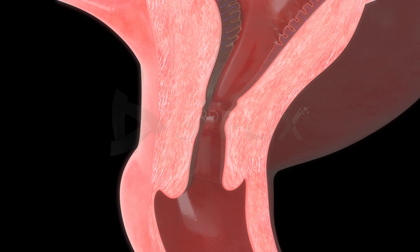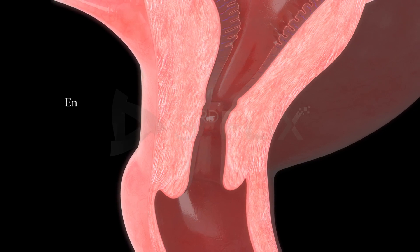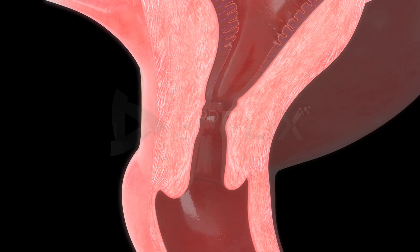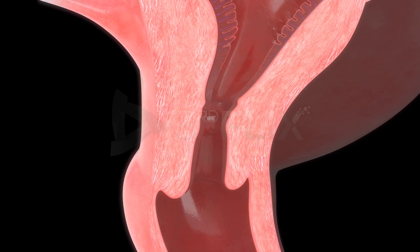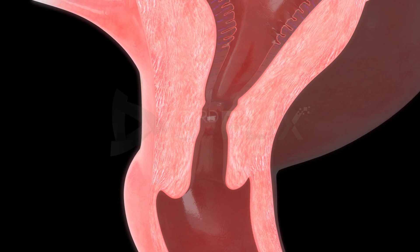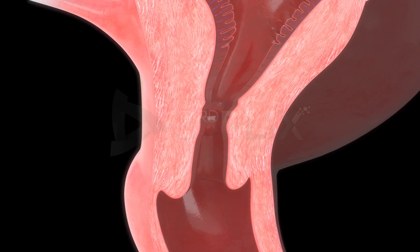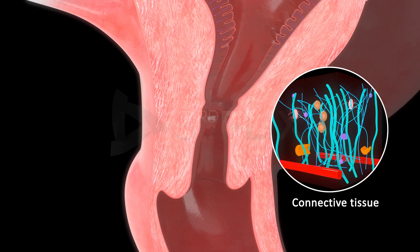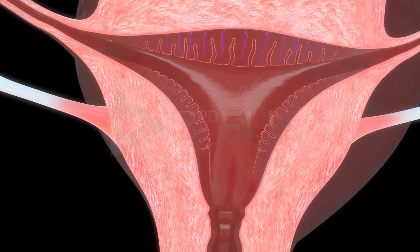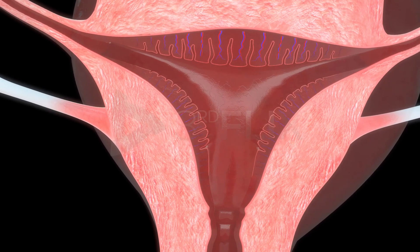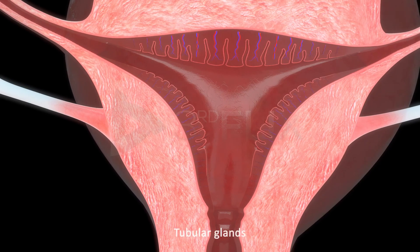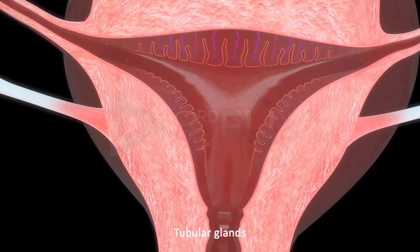The inner layer of the uterine wall is called the endometrium. The endometrium, or mucosa layer of the uterus, consists of the inner epithelial layer and the lamina propria. The lamina propria is made up of areolar connective tissue. The endometrium is richly vascular and glandular, with a large number of screw-like blood vessels and many coiled tubular glands.